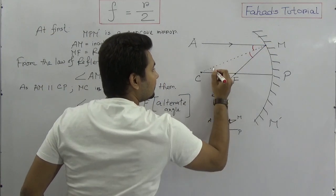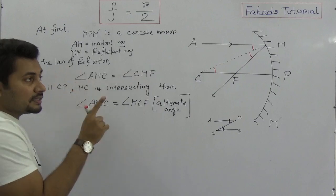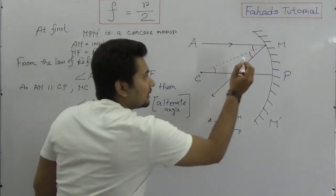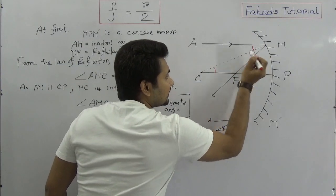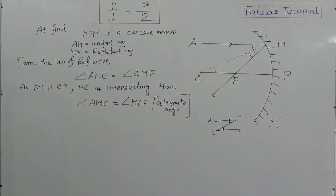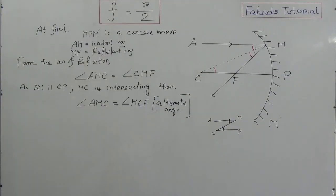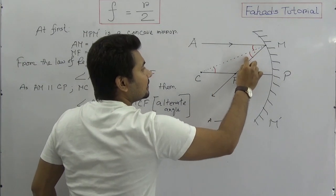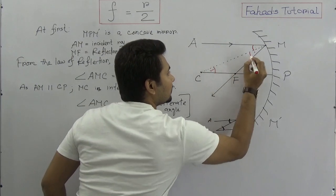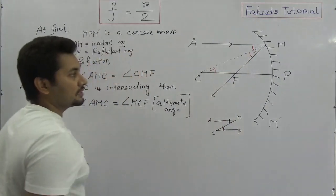So in my previous explanation we said angle AMC and angle CMF are equal by the law of reflection, and now we are saying angle AMC and angle MCP are equal as alternate angles. So combining these results, we can say that angle CMF and angle MCF are equal — this will be important for the triangle.